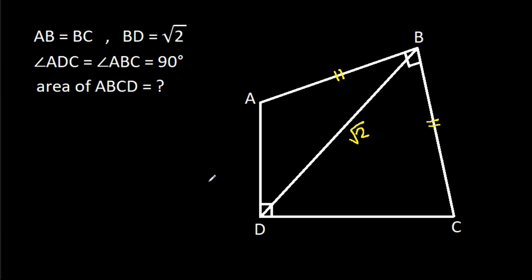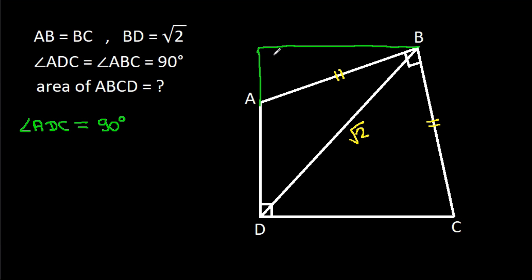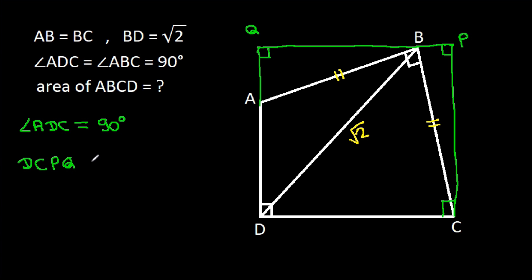We have angle ADC is 90 degrees, and if we make a rectangle — suppose this point is P and this point is Q — such that DCPQ is a rectangle. That is our construction.